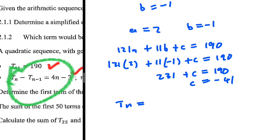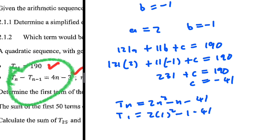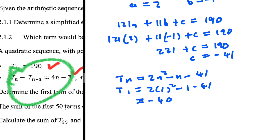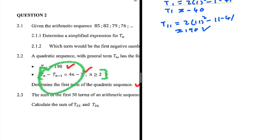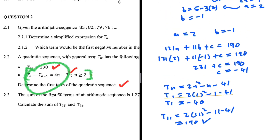So tn = 2n² - n - 41. Then t1 = 2(1)² - 1 - 41 = 2 - 1 - 41 = -40. Verifying: t11 = 2(121) - 11 - 41 = 242 - 52 = 190. That confirms our system of equations was solved correctly. That's 2.2 — let me know in the comments if you used a different approach and got the same answer.